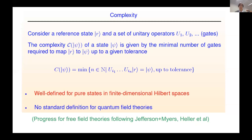This definition is well-defined for pure states in finite-dimensional Hilbert spaces. But to test complexity proposals in the context of ADS-CFT, we need an appropriate definition within quantum field theory. The problem is that in QFT you have an infinite-dimensional Hilbert space, and there's no standard definition of this quantity. This has been a very active research topic for the last three or four years, beginning with free field theories following Jefferson, Myers, Heller, and many others. For free field theories there are many proposals, but for ADS-CFT we need interactions and even strong coupling, which is very challenging.